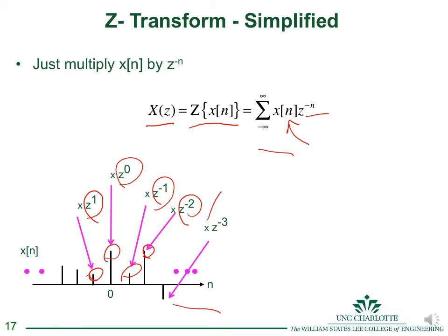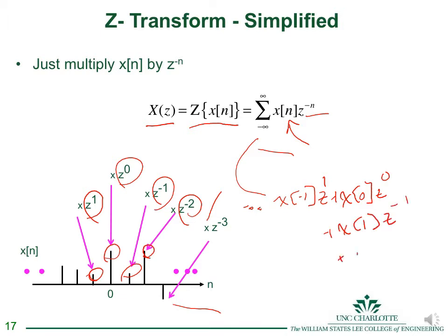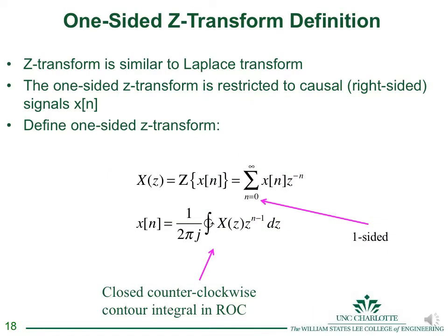You add all those terms together: x(-1)·z^1 + x(0)·z^0 + x(1)·z^(-1) + x(2)·z^(-2) and so forth. Until you get a good sense for this, it's not a bad idea to write these out as your first examples.